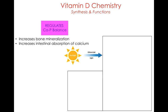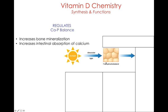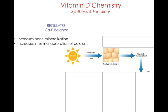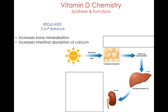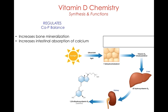Vitamin D is involved in regulation of calcium and phosphorus, two important minerals. It helps to increase bone mineralization to improve bone density, and also helps to absorb calcium from the intestine. Our body has the ability to synthesize vitamin D from sunlight. When sunlight hits the skin, a chemical called 7-dehydrocholesterol forms vitamin D3, which travels from the skin to the liver, then to the kidney, where the final form — calcitriol — is made. It's in this form that vitamin D is involved in bone mineralization and increased absorption of calcium from the intestine.